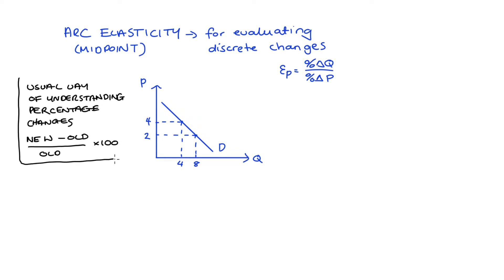Our usual way of understanding percentage changes is to take the change in a variable — the new value minus the old value — divide that change by the old value, and multiply by 100. But this is actually not the way we're going to understand percentage changes when thinking about arc elasticities, because if we do it this way, the value of the elasticity changes depending on whether we're increasing or decreasing the price.